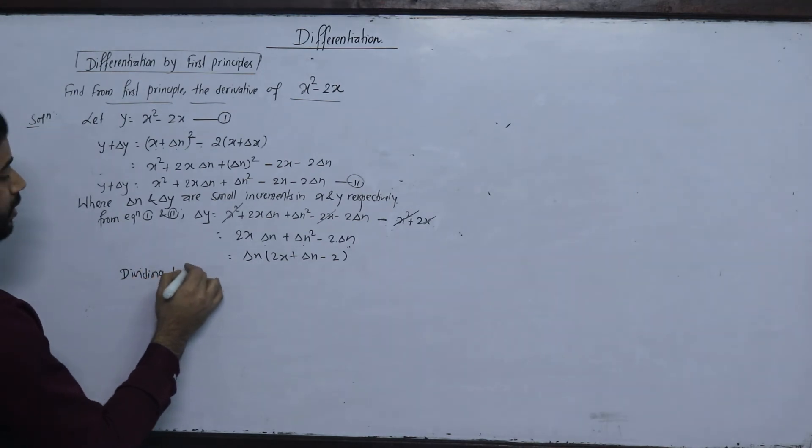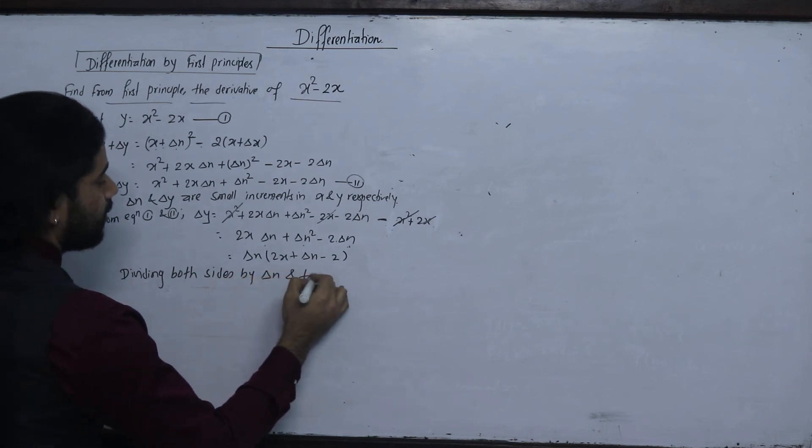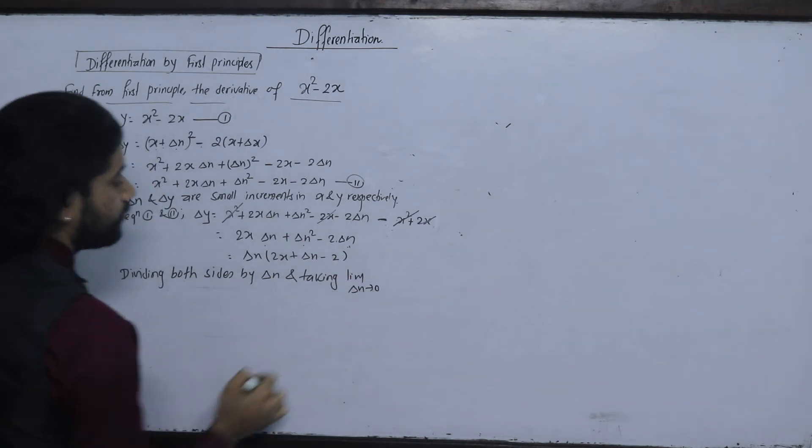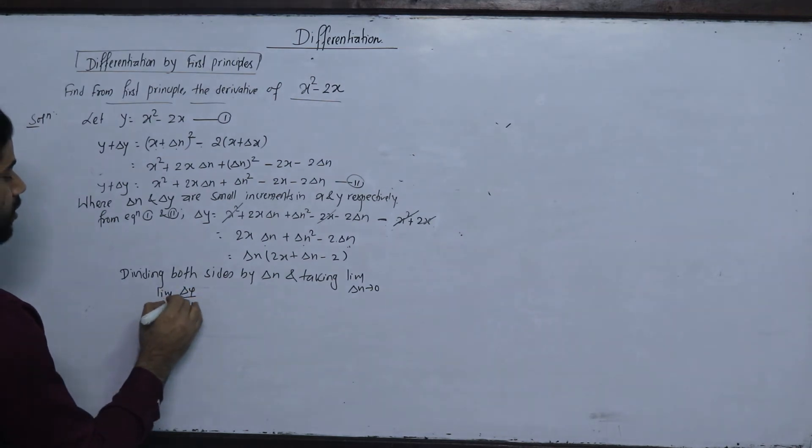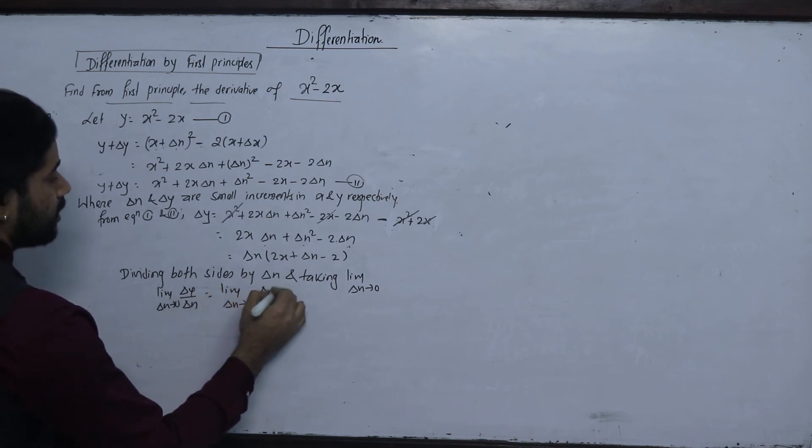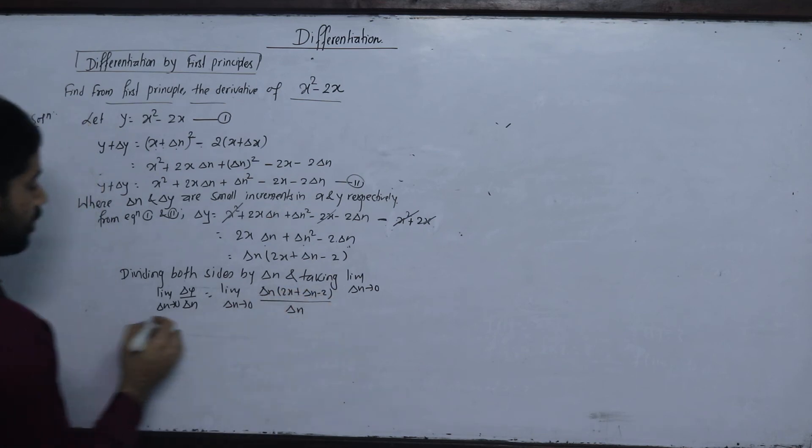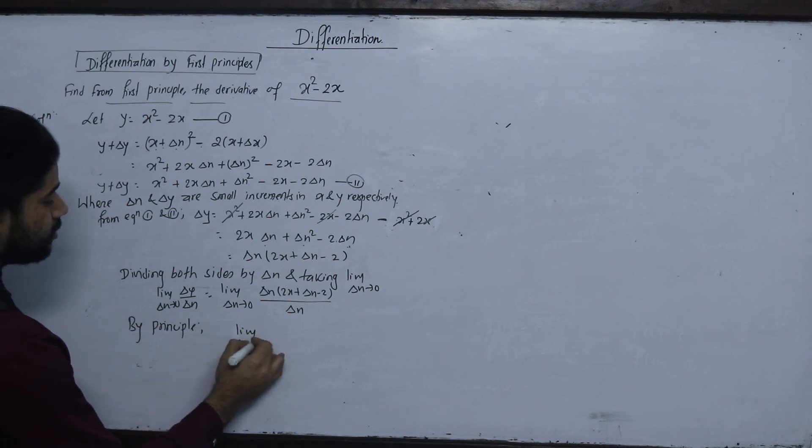Dividing both sides by delta x and taking limit delta x tends to 0. Delta y upon delta x, limit delta x tends to 0, equals to limit delta x tends to 0, delta x times 2x plus del x minus 2 upon delta x. By principle, limit delta x tends to 0, delta y upon delta x.